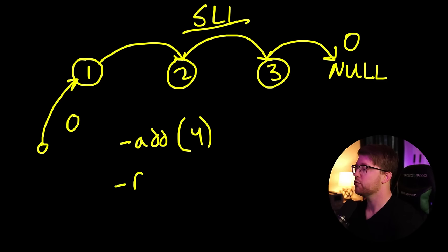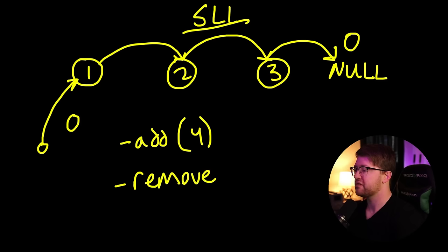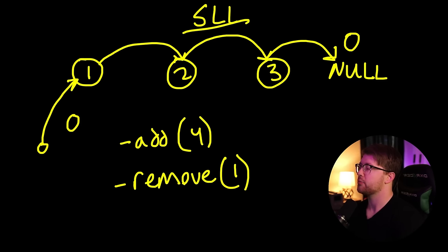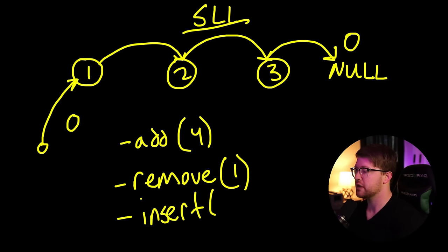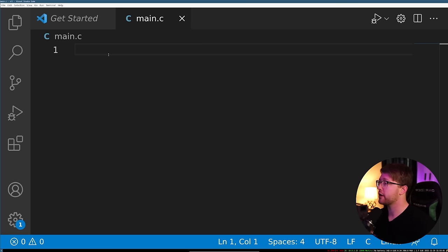We can also remove an element in the list. We can write a function called remove that removes an element that matches some value. And then finally, we have insert — we can say that we want to insert value three at position two, and there's an operation we can do to make that happen.